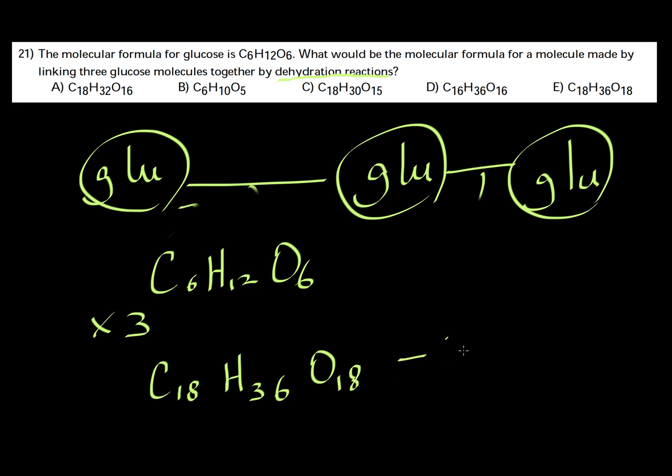But we're losing two water molecules. So basically, we're losing two H2s and two O's. We need to subtract these. C stays the same, so it's going to be C18H. We're losing four Hs.